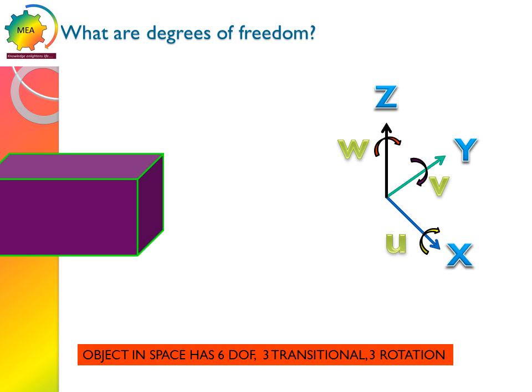Any object in space will have 6 degrees of freedom, 3 transitional and 3 rotational as shown above.